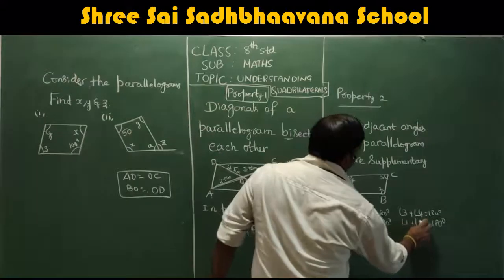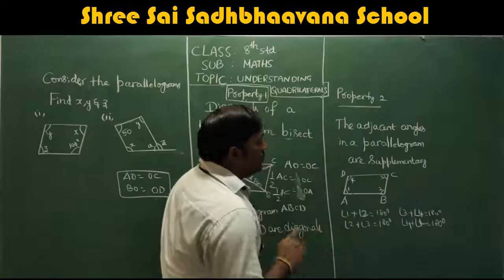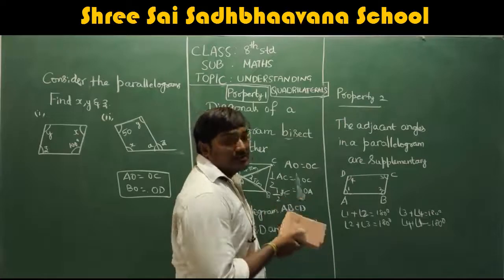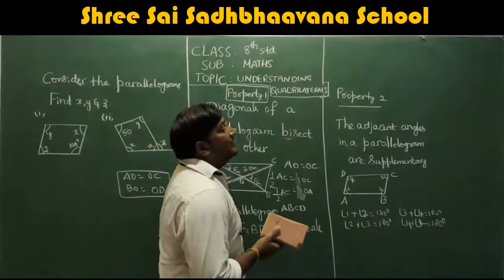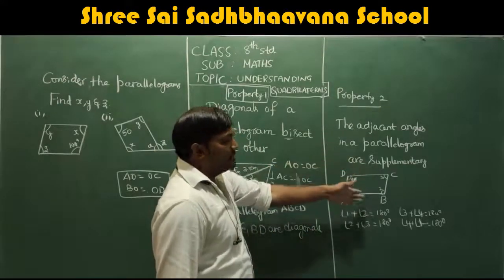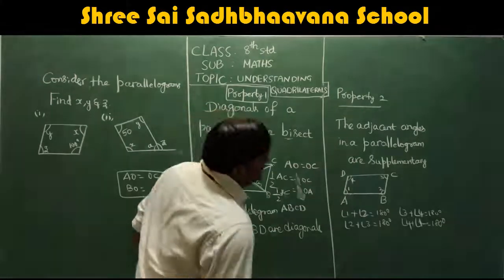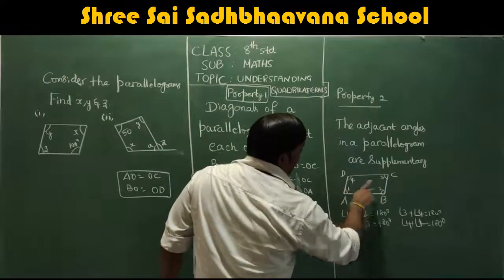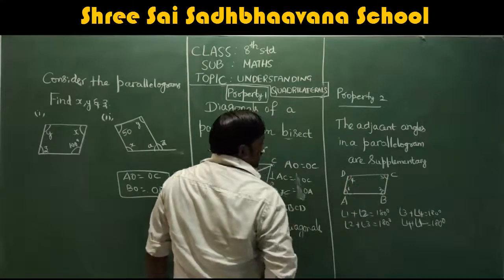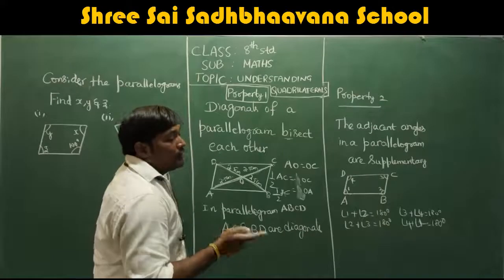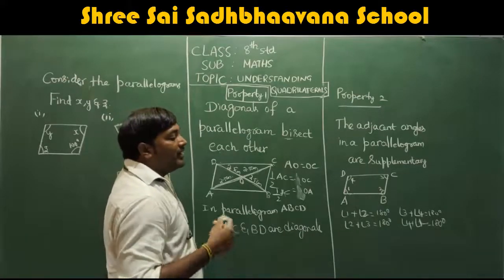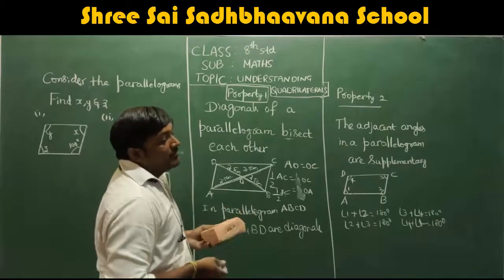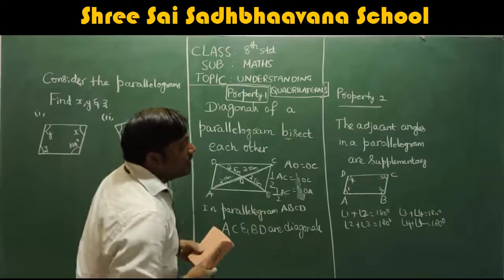So adjacent angles are supplementary — their sum is 180. Instead of saying angle 1 plus angle 2 is 180, angle 3 plus angle 4 is 180, you can directly say that adjacent angles are supplementary. The adjacent pairs are 1 and 2, 2 and 3, 3 and 4, 4 and 1 — each pair sums to 180 degrees. That is the property of adjacent angles in a parallelogram.